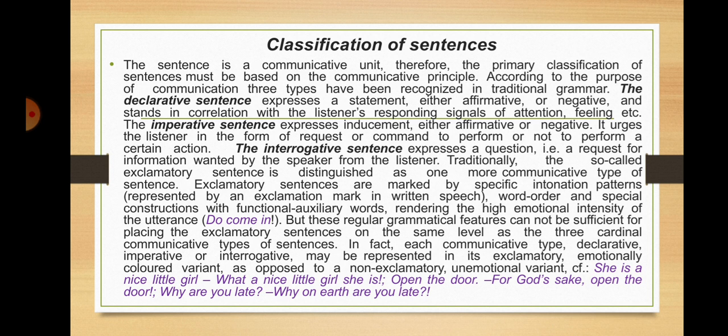The interrogative sentence expresses a question — that is, a request for information wanted by the speaker from the listener. Traditionally, the exclamatory sentence is distinguished as one more communicative type. Exclamatory sentences are marked by specific intonation patterns, word order, and special constructions with functional auxiliary words rendering the high emotional intensity of the utterance — for example, 'do come in.' However, these grammatical features cannot be sufficient for placing the exclamatory sentence on the same level as the three cardinal communicative types.